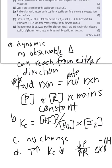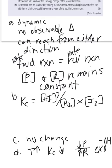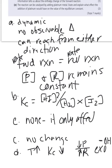Part E: the reaction can be catalyzed by adding platinum metal. What effect would the addition of platinum have on the value of the equilibrium constant? None. Catalysts only affect rates, not yield. It affects the rate but not the yield.